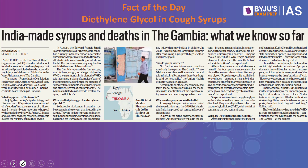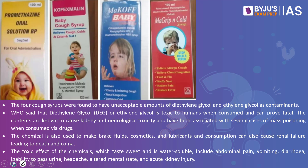Now let's look at the Fact of the Day: diethylene glycol in cough syrups. Recently, about 66 children passed away in the western African nation of Gambia. When investigated, it was found that four cough syrups consumed by these children led to their deaths. The four syrups were: Promethazine Oral Solution, Coughlin Baby Cough Syrup, Maycough Baby Syrup, and Magrib and Cold Syrup.